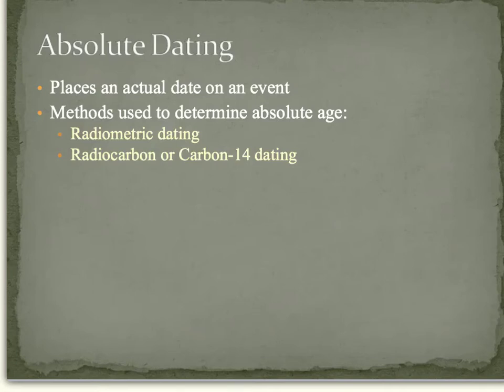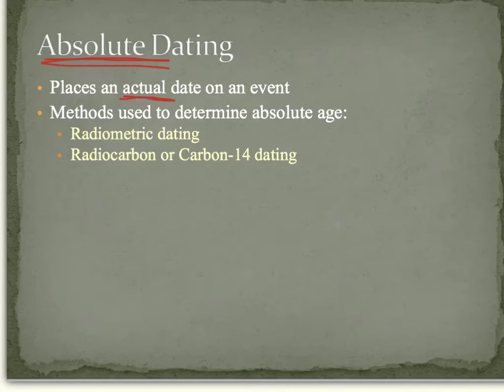Welcome to part 3 of our History of Earth Notes. We're going to start off with absolute dating. Absolute dating places an actual date on an event — for example, saying something is 15 billion years old. It gives it an actual number.